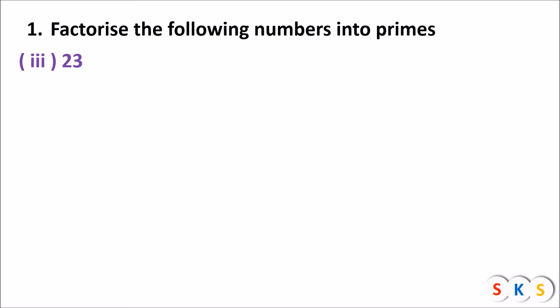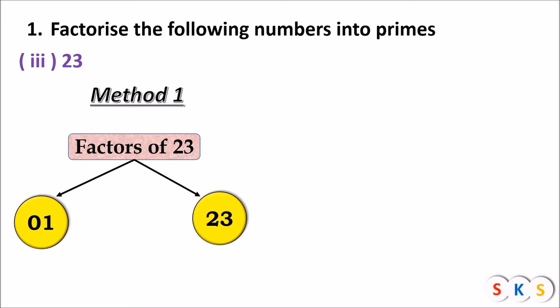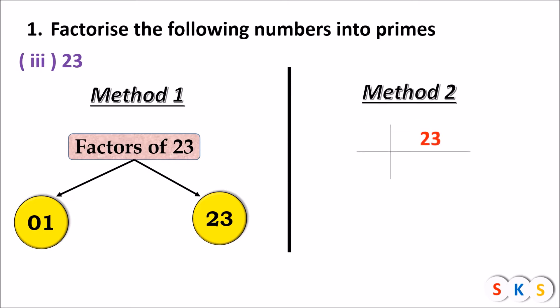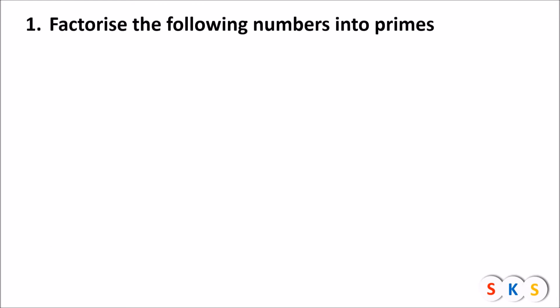Question number 3: 23. Method 1: We take two numbers whose product is 23. Since 23 × 1 = 23, and 23 is already prime — it has exactly two factors, 1 and 23 — the prime factorization is 1 × 23. Method 2: 23 is divisible by 23, so 23 ÷ 23 = 1. The prime factors of 23 = 23 × 1.